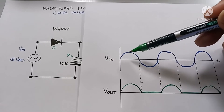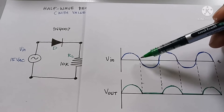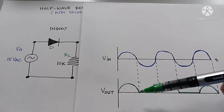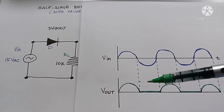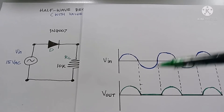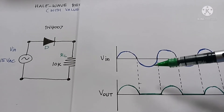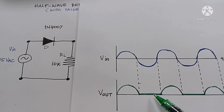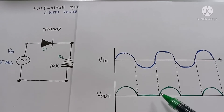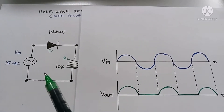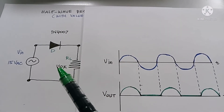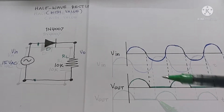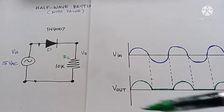At the positive half cycle of an AC voltage, the diode conducts because it is in forward bias. For the negative half cycle of an AC voltage, the response of the diode is zero because the diode is in reverse bias during the negative half cycle, which means the diode acts as an open circuit and there is no current flow through it.